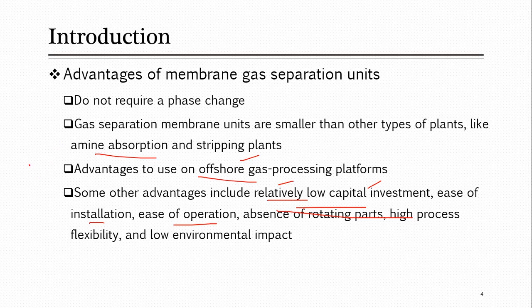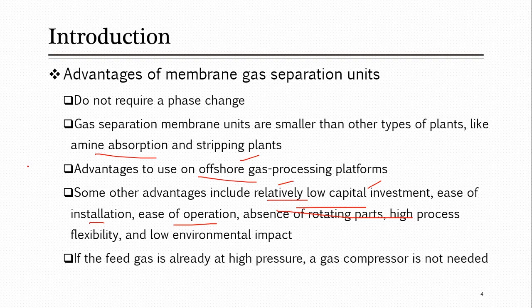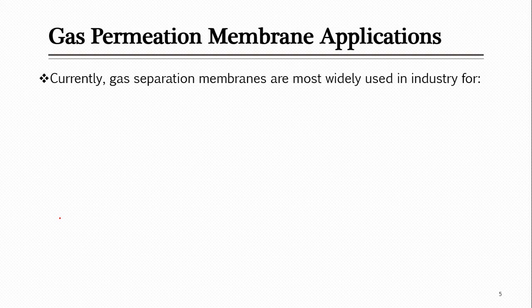One overall disadvantage is that you have to compress the gases, since the feed-side pressure must be high — as we know from reverse osmosis. This problem can be overcome or avoided if your feed gas is already at high pressure and does not need additional compression. But even with compressor costs, when you compare all costs with other technologies, membranes are still advantageous compared to the other techniques.